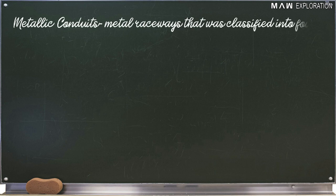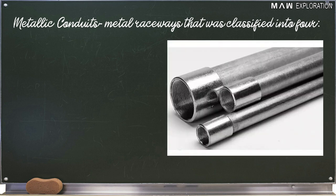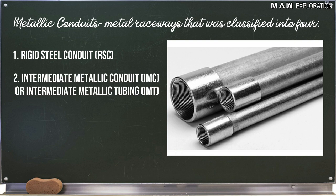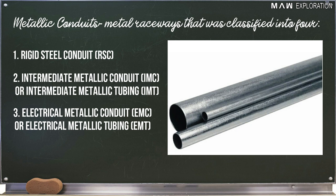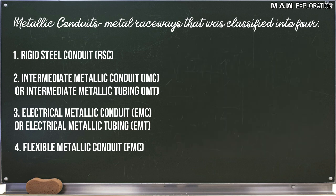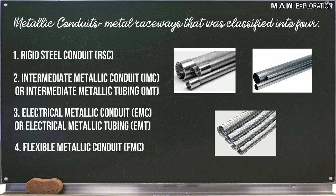Number 10, metallic conduits. These are metal raceways and were classified into four. First is rigid steel conduit or RSC. Second is the intermediate metallic conduit or IMC or intermediate metallic tubing IMT. Third one is electrical metallic conduit. And the last one is flexible metallic conduit or FMC. These are durable metallic tubing used to protect and provide a route for individual electrical wiring conductors.